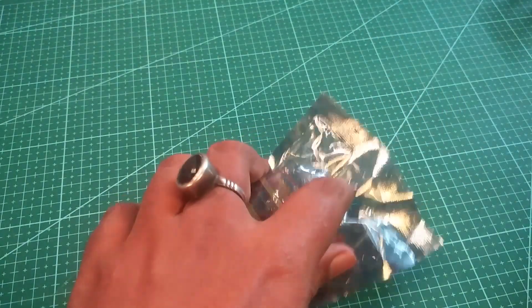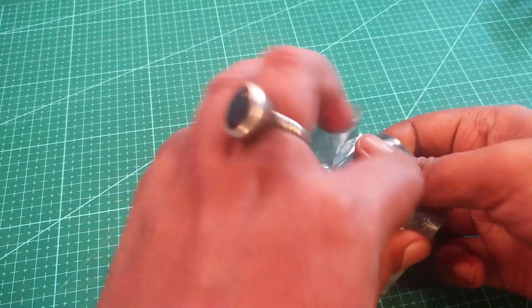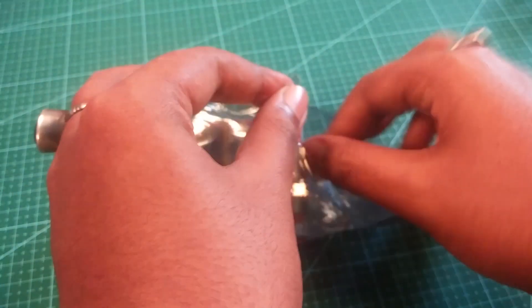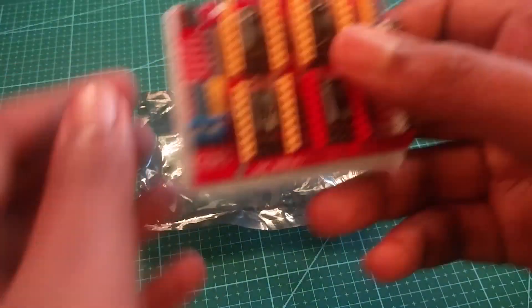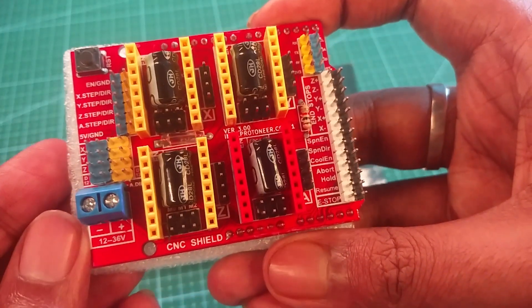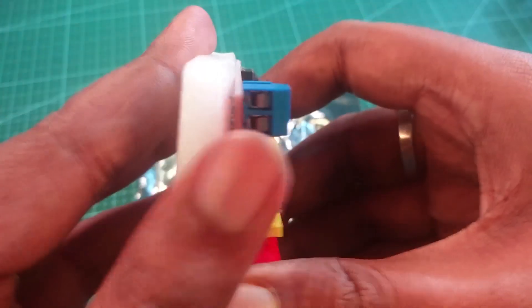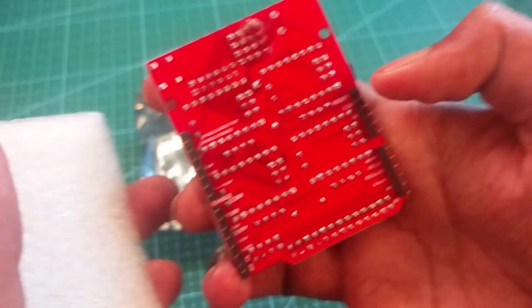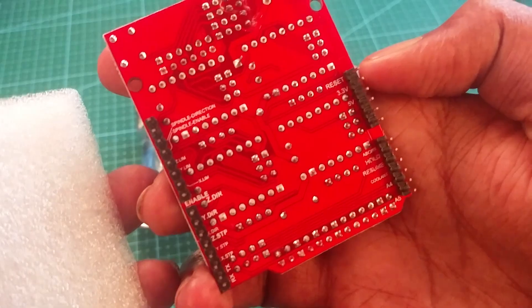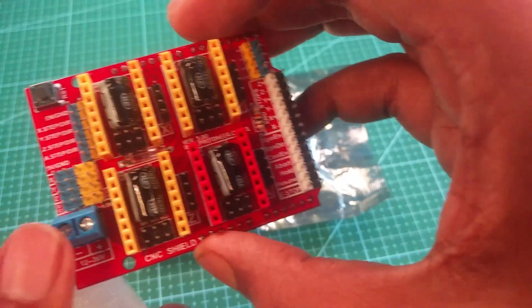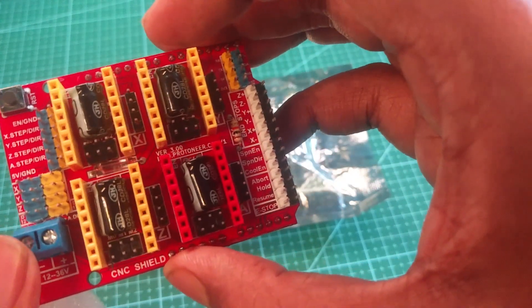To cut down the development time we are using a CNC shield which can be used with Arduino Uno and Mega board. This CNC shield can drive up to 4 stepper motors with stepper motor drivers and it has a connection port for X, Y, and Z limit switches.